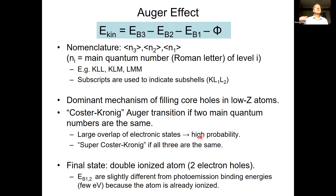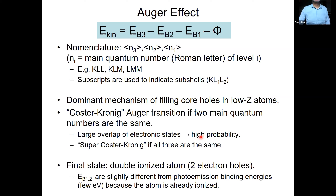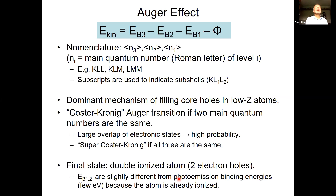Super Coster-Kronig means all three electronic levels are in the same shell, which can only happen for higher shells such as the O shell. It is also important to remember that the Auger effect leaves behind a doubly ionized atom, so the binding energies are slightly different from those determined in XPS, but still very similar — we can use them to estimate the binding energies of Auger electrons.